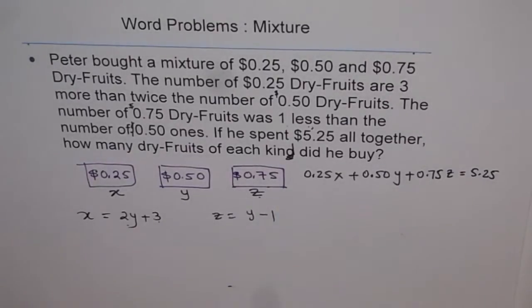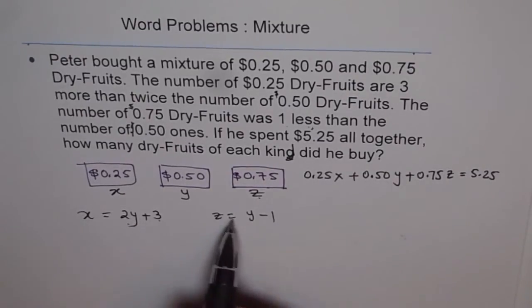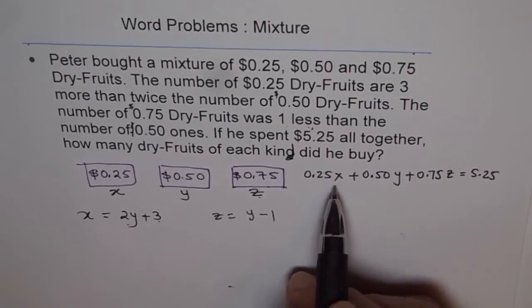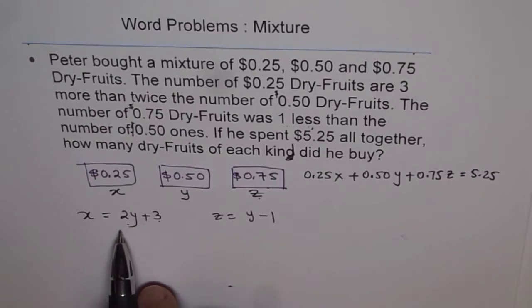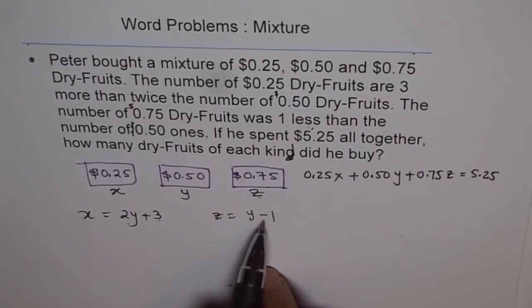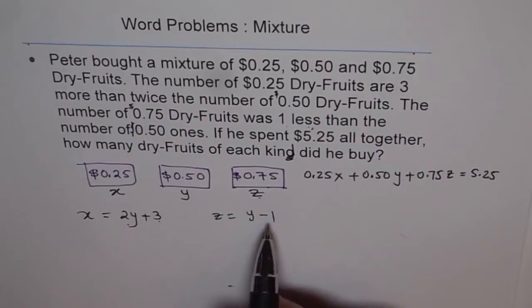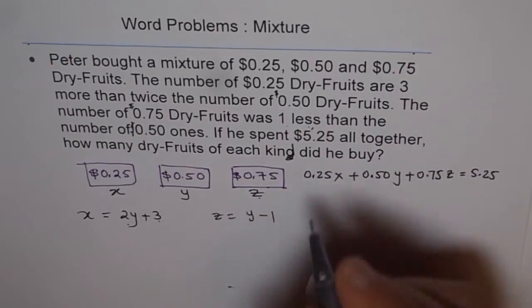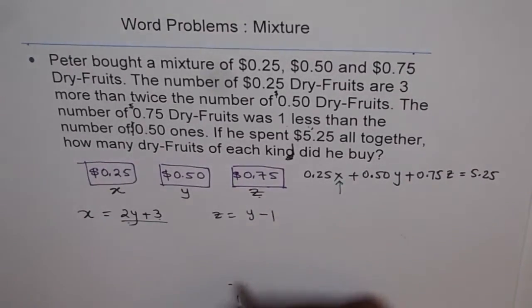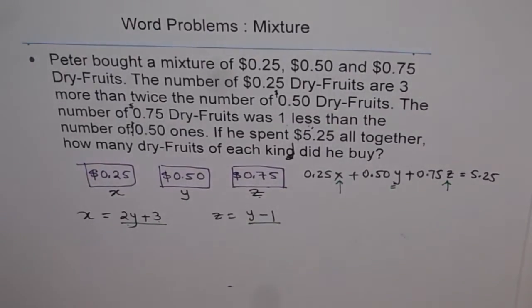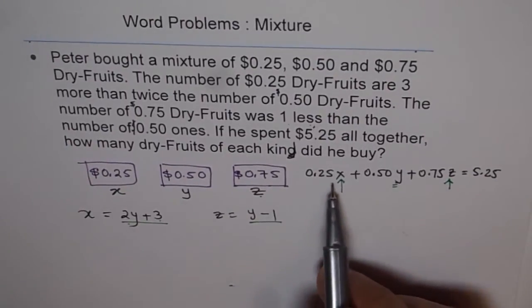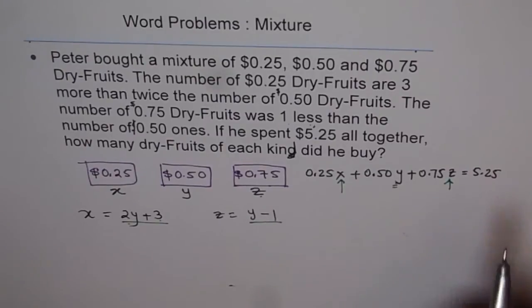Now we have one equation relating cost, and two relations between the numbers — three variables in total. What we can do is write everything in terms of one variable. X is in terms of Y, and Z is also in terms of Y, so we leave Y as is. We will replace X with 2Y + 3 and Z with Y − 1, giving us an equation in Y only.